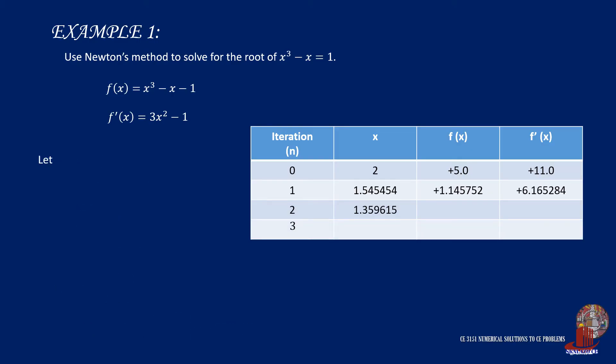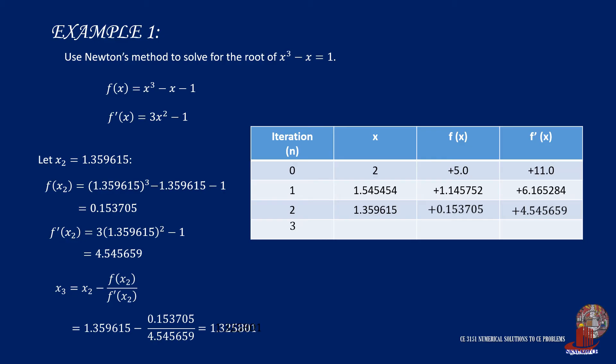Now, let's use x sub 2 which is equal to 1.359615 into the two functions again. The function of x sub 2 becomes positive 0.153705, and that of f' of x sub 2 gives positive 4.545659. Plug the new values in the formula to come up with positive 1.325801.